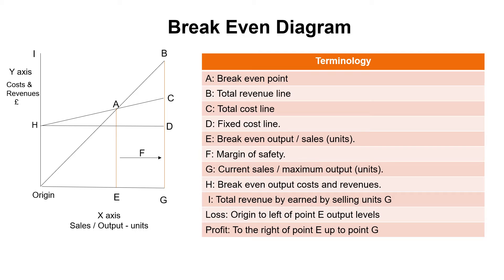The starting point for drawing the chart is identifying the values G and I. G will be the sales level or the maximum output level, whichever figure is higher. I is just the sales multiplied by the selling price per unit — G times selling price per unit gives you I. Once you have the axis values, draw your fixed cost line which is HD. Watch out in exam questions — they may give you total fixed cost or fixed cost per unit, but you're looking at total fixed cost.